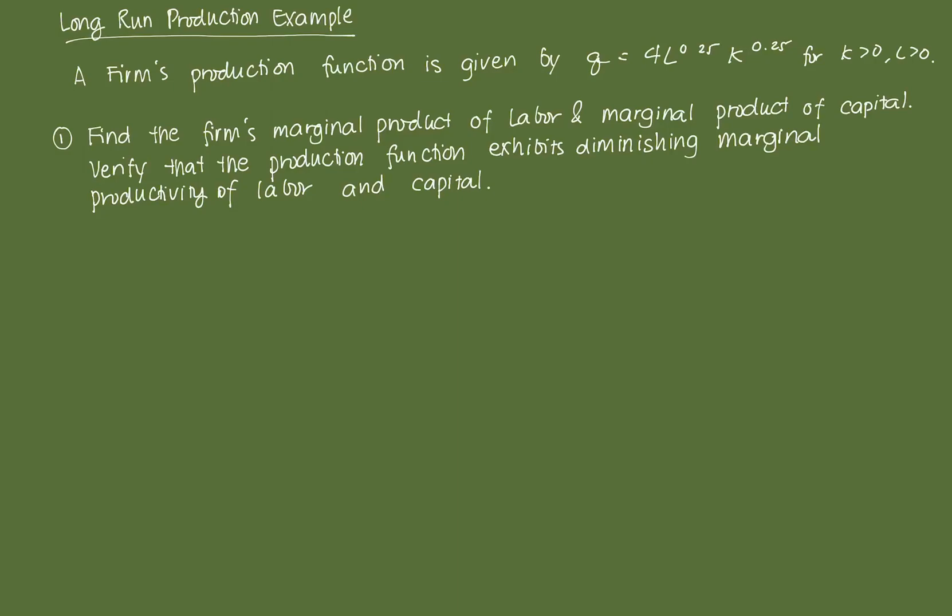Hi everyone. In this video, we're going to discuss an example of long-run production, and we'll go through the derivations to try and get the functions we're looking for. Let's say a firm has a production function given by Q — the level of output — equal to 4L raised to 0.25 times K raised to 0.25, for all strictly positive values of K and L, which are labor and capital.